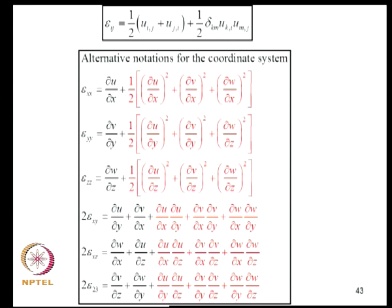In tensorial notation with repeated indices implying summation and comma denoting differentiation, the Green-Lagrange strain can be written compactly. In XYZ coordinates (replacing X1, X2, X3), the equivalent expressions can be written out.